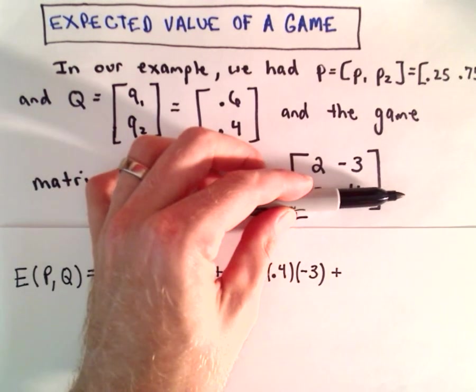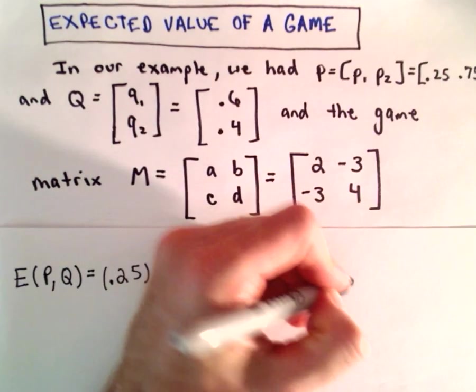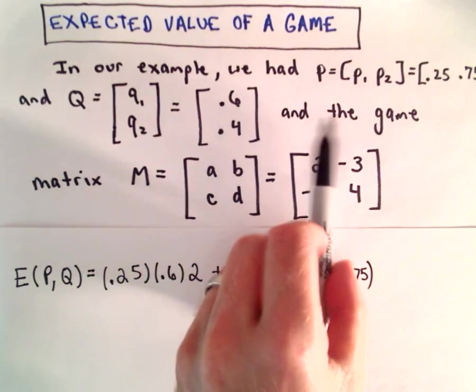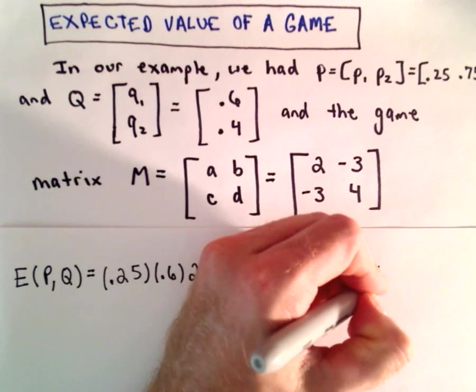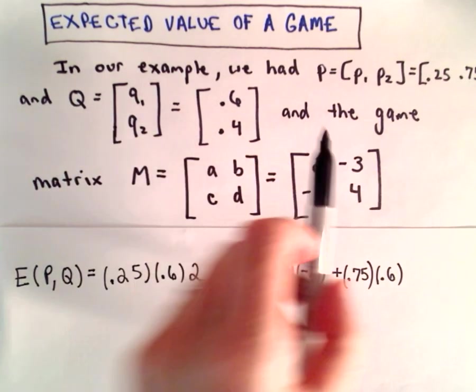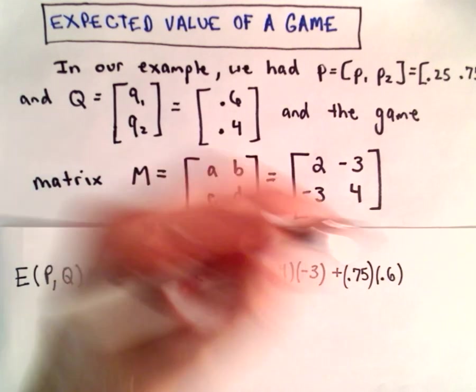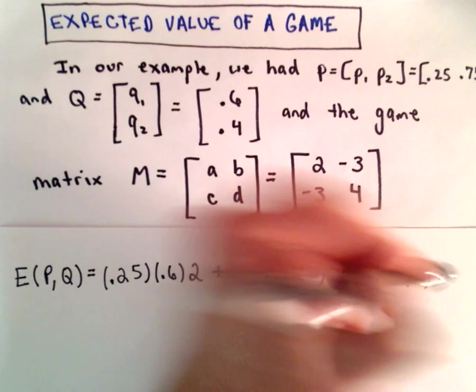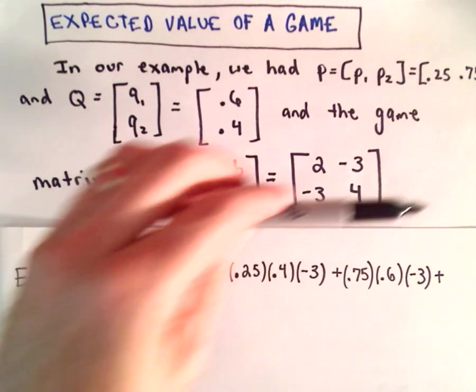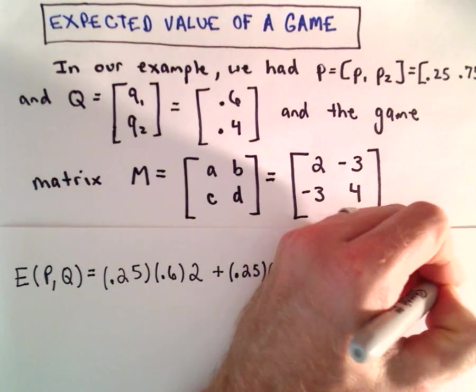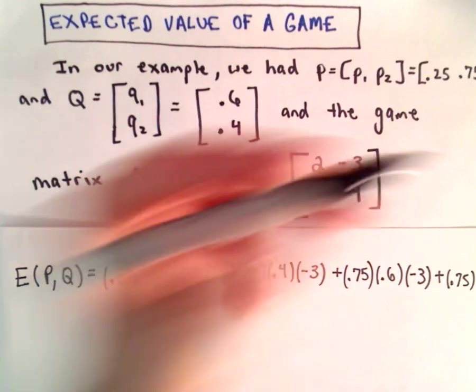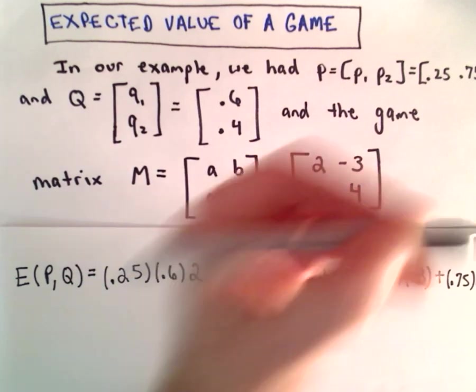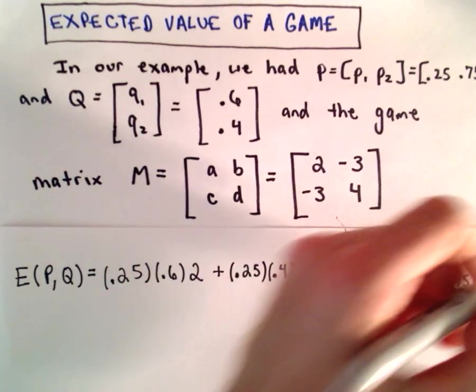The probability that the second row is picked, we said that's going to be 0.75. The probability of the first column is used is 0.6. And if the second row and first column are picked, there's going to be a loss of $3 to the row player. And last but not least, the probability of choosing the second row is 0.75. The probability of choosing the second column is 0.4. And in this case, we'll have to multiply that by 4.